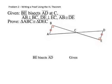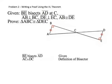So the first step, as always, is our given information. We're going to pull out that segment BE bisects segment AD because it's given. Next, we're going to say that segment AC is congruent to segment DC because of the definition of bisector.